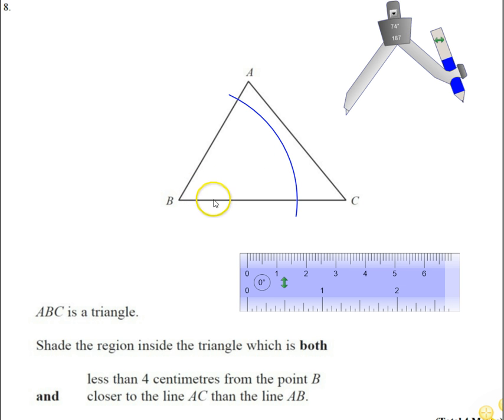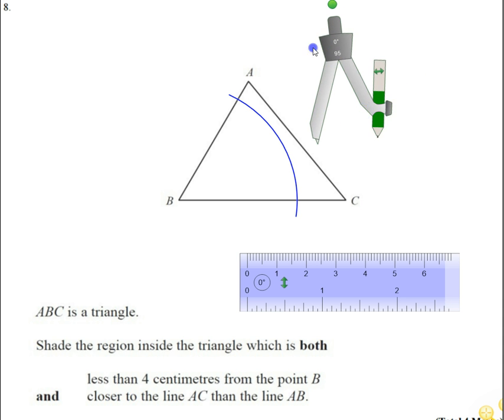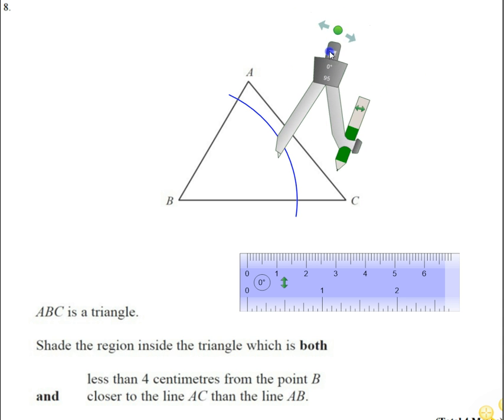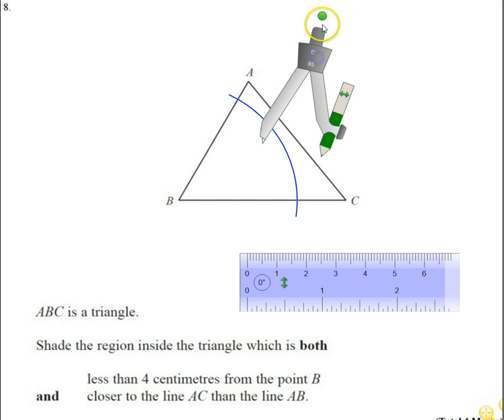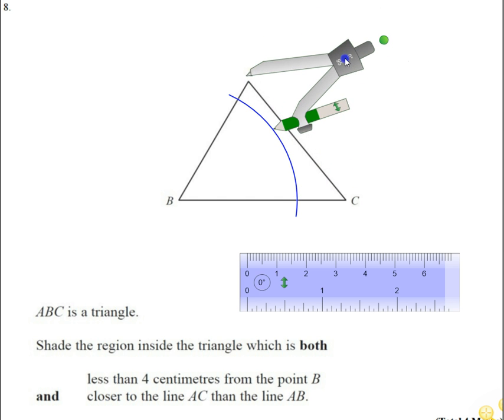We don't want to shade anything yet because we haven't finished. We also want to find all the points that are closer to line AC than they are to line AB. So I'm just going to switch colors here, let's go for green, and we're going to draw some construction lines. In order to find the points that are closer to AC than they are to AB, we need to bisect this angle. So we want to cut this angle into half.